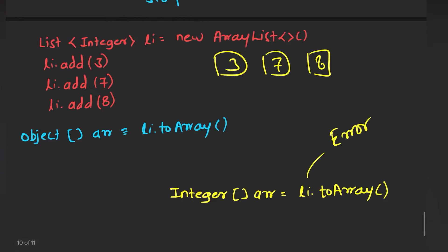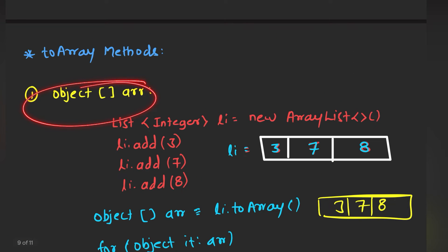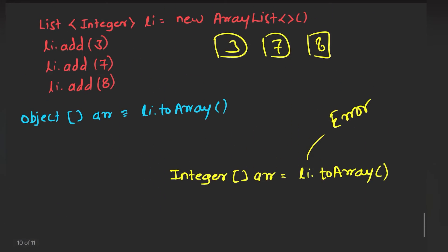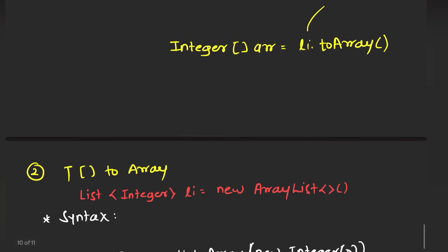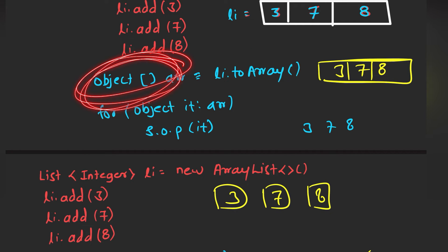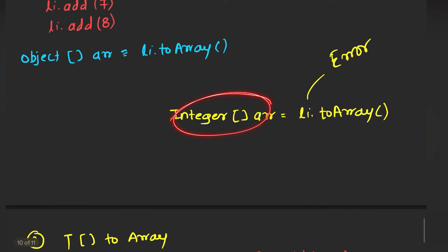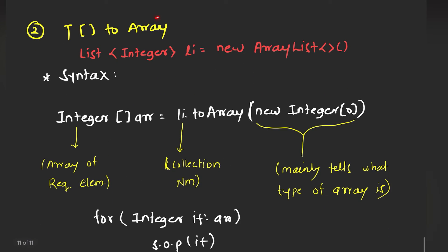This is the reason why the object array is not much used — in order to convert into a particular data type, we need to typecast. But before we can typecast, it simply shows an error when you try to execute that line of code. In order to deal with these problems, we come across a new method to convert the list into an array. This is called the T[] toArray method.